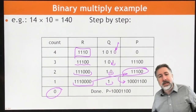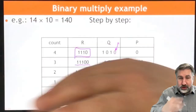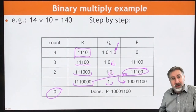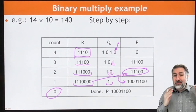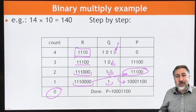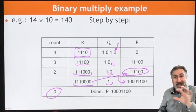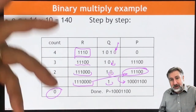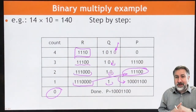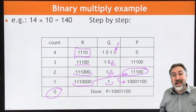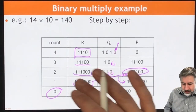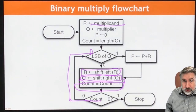So we're shifting through the multiplier to check each bit, and we're shifting the multiplicand to multiply it by two, four, eight, sixteen, and so on. That shift is a multiplication by two, by four, by eight — and depending on whether we add those or don't add them, we can get a multiplication by any value. That's the general process of this flowchart.